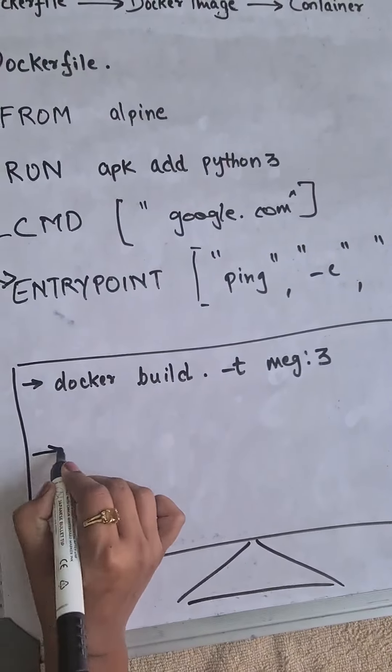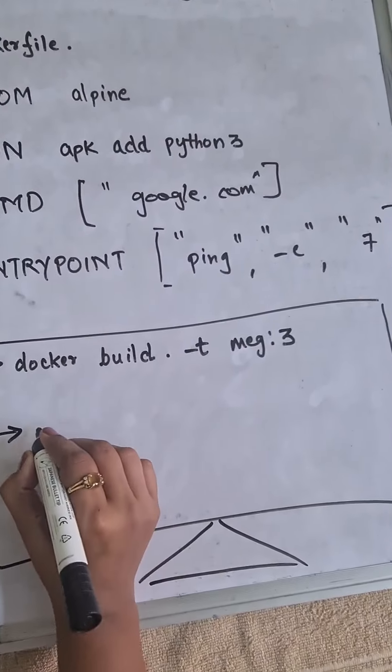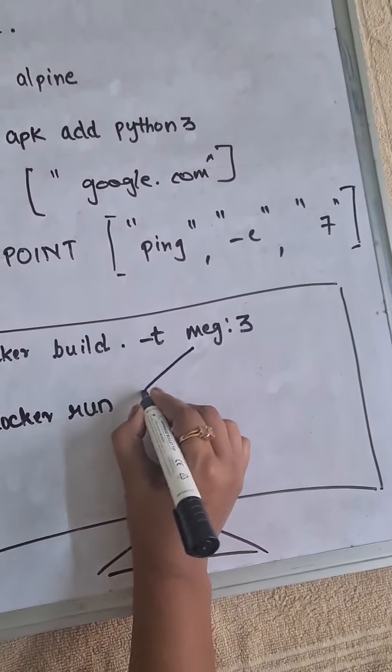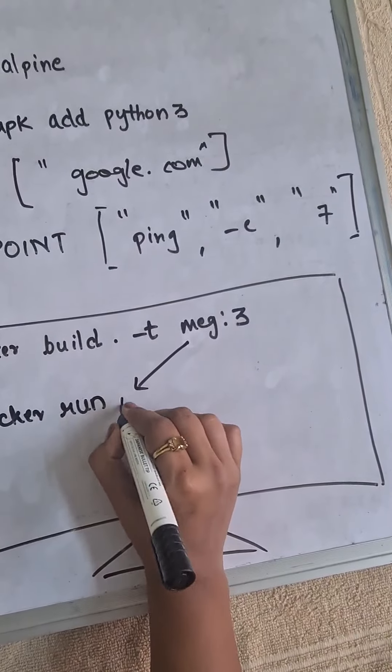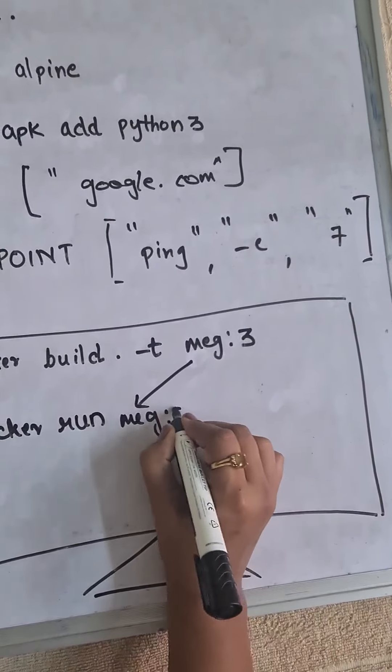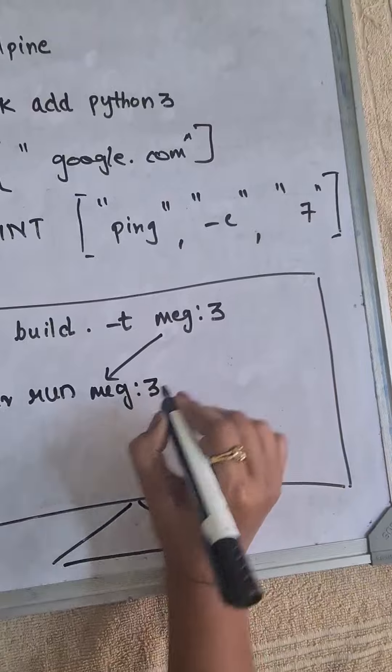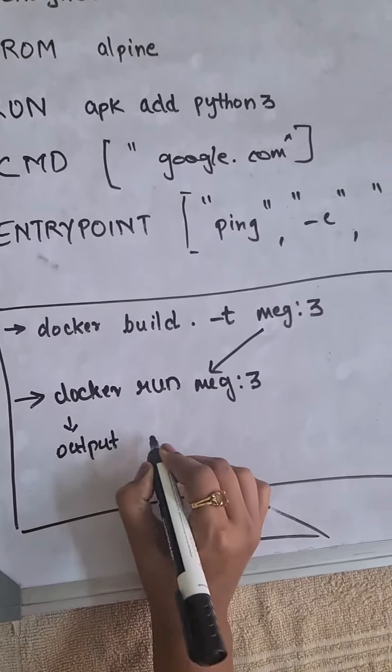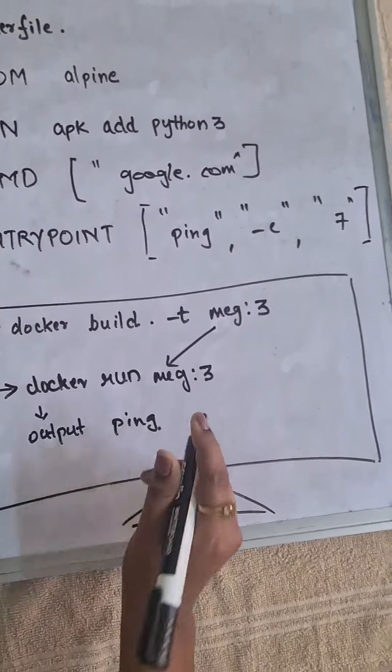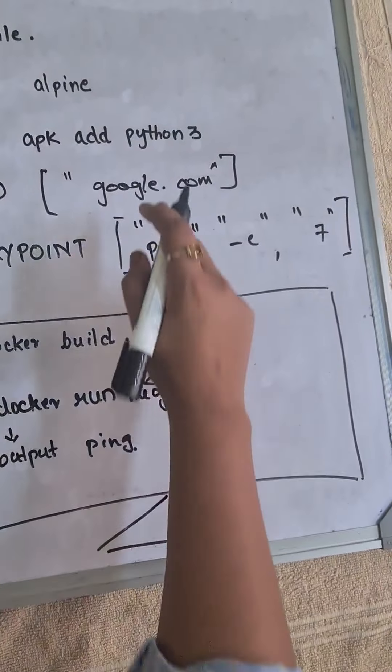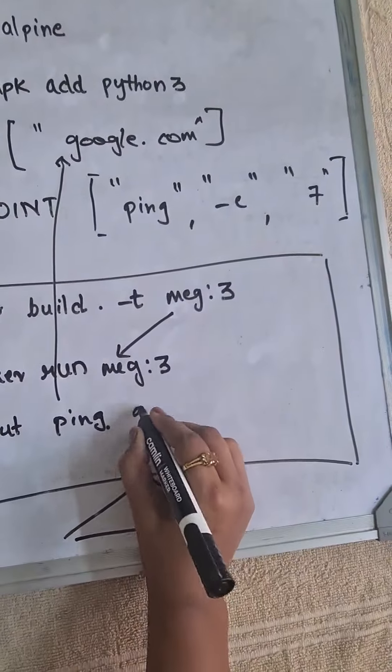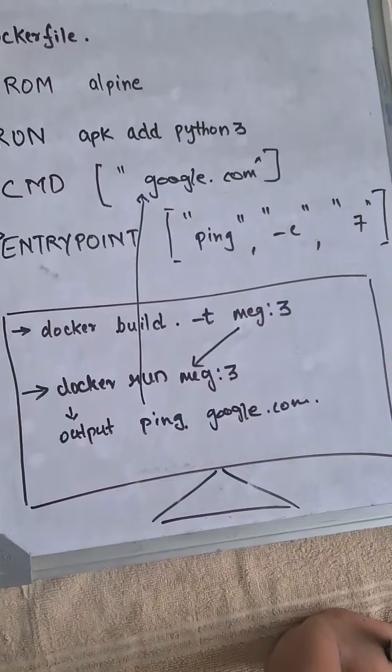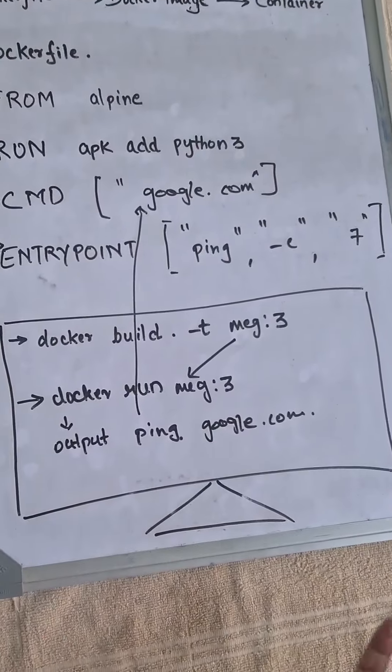Now let's run our container. So the command is docker run meg:3. So the output of this command will be it will ping seven times to google.com. So this would be the output of my docker run command that is used to start a container.